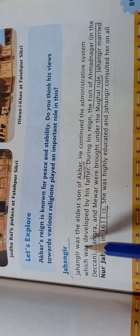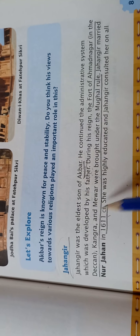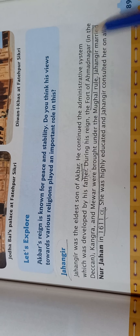After the death of Humayun, his son Akbar, who was just 13 years old, ascended the throne. Initially, Bairam Khan, Akbar's tutor, managed the affairs of the Mughal Empire. After a few years, Akbar took full control of the empire.